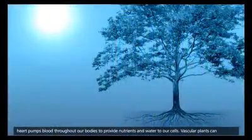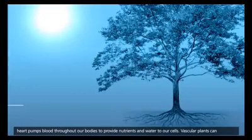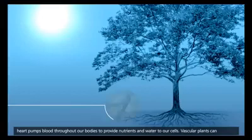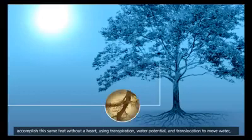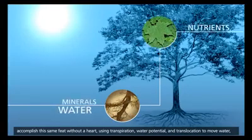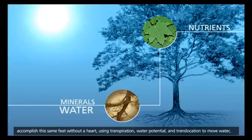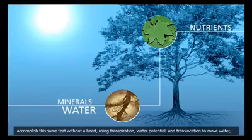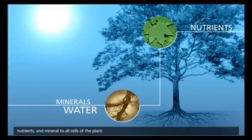Our heart pumps blood throughout our bodies to provide nutrients and water to our cells. Vascular plants can accomplish this same feat without a heart, using transpiration, water potential, and translocation to move water, nutrients, and minerals to all cells of the plant.